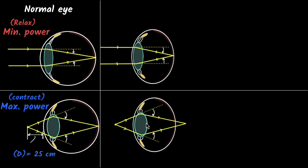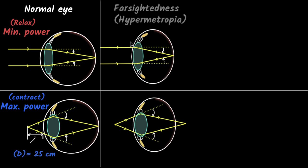But what about close objects? Your eyes are already at the maximum power — the ciliary muscles are already contracted to their maximum. Can they push even further? No, because you're already at maximum power. Which means it will not be possible to increase the power more and bring the rays back onto the retina. So if your eyeballs are shrunk, you can see things far away but you will have a problem looking at things nearby. This condition is what we call farsightedness.